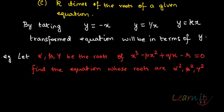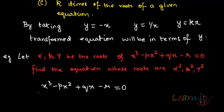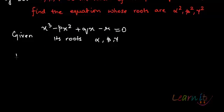For example, alpha, beta, gamma are roots of the cubic equation x³ - bx² + qx - r = 0, and we need to find the equation whose roots would be the squares of these previous roots — that is, alpha squared, beta squared, gamma squared. So how would we go about it? We need to find the equation whose roots are alpha², beta², gamma², given that alpha, beta, gamma are roots of x³ - bx² + qx - r = 0.